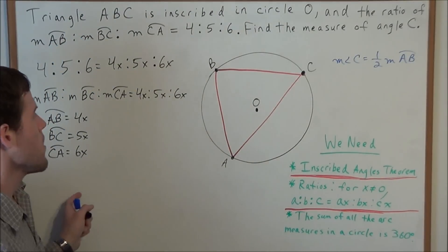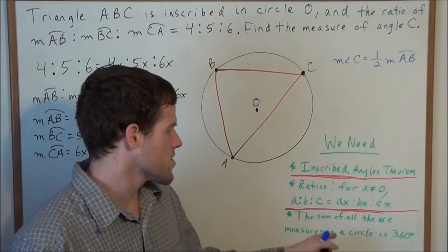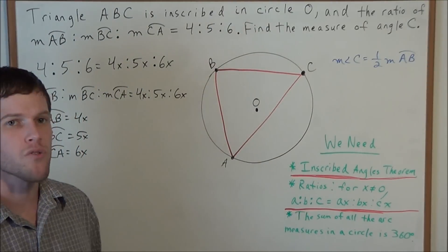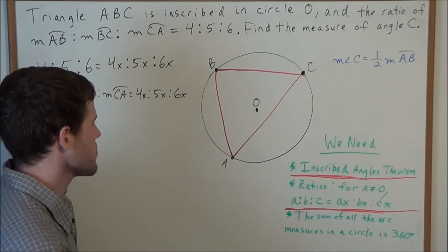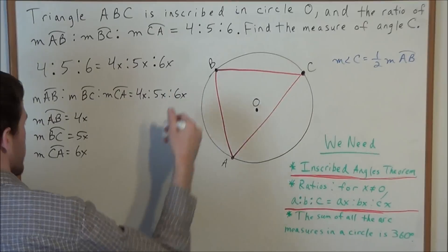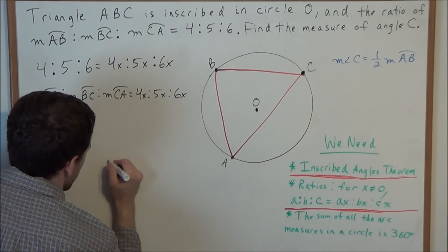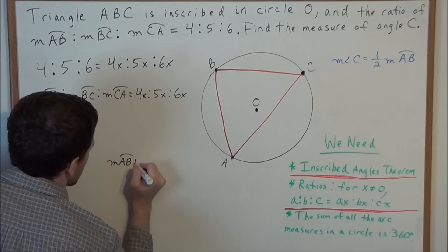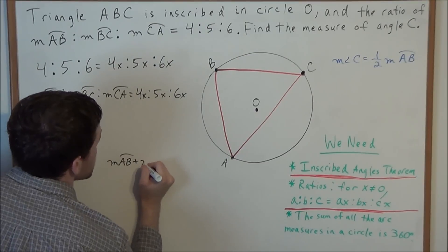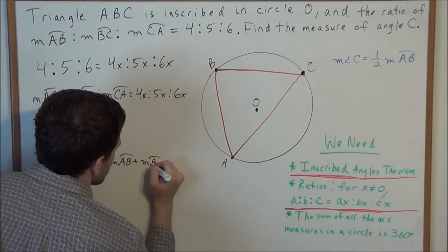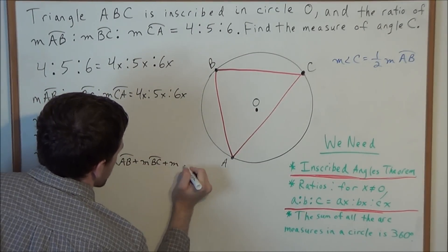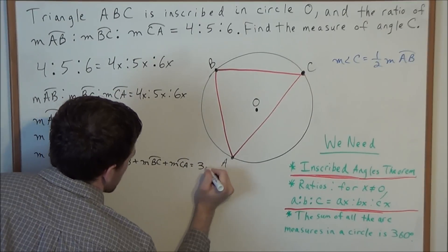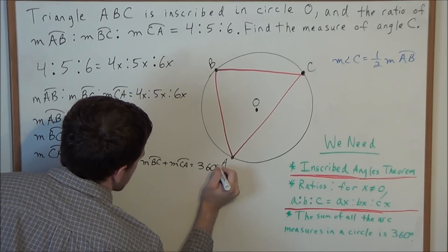Now we consider the fact that the sum of all arc measures in a circle is 360 degrees. So the measure of arc AB plus the measure of arc BC plus the measure of arc CA equals 360 degrees.